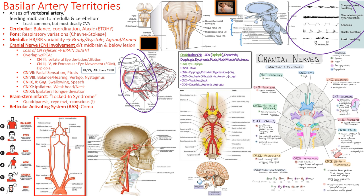The basilar artery also takes a detour out to the cerebellum — a little structure beneath the cerebrum — which is responsible for balance and coordination. So they have an abnormal gait. There are two different strokes that cause gait problems: one causes an inability to walk on the contralateral side — that's an ACA stroke — and the other causes someone who looks drunk — that's a basilar artery stroke.